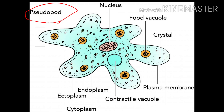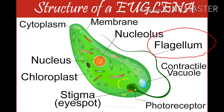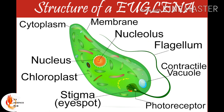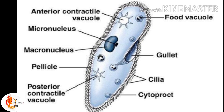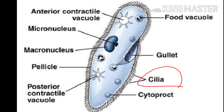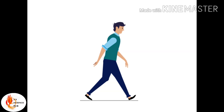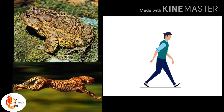Different organisms use different appendages to move. For example, amoeba uses pseudopodia for locomotion, while Euglena uses its flagella. Paramecium and similar cells use their hair-like cellular organelles called cilia for locomotion.